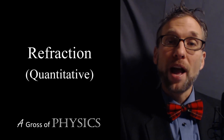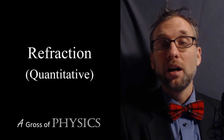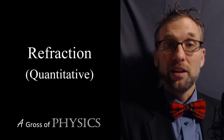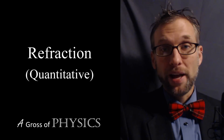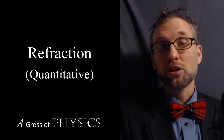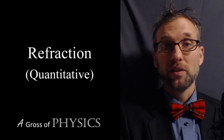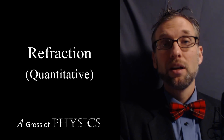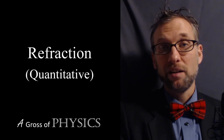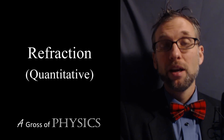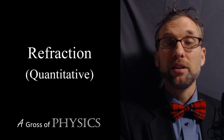Refraction is when a wave enters a new material and changes speed. It can either speed up or slow down. In the case of light, the more dense the material is, the slower light will travel; the less dense, the faster light will travel. Since light can travel through the vacuum of space, the speed of light in a vacuum is 3 times 10 to the 8 meters per second, and we denote that with the letter C.